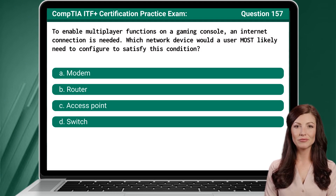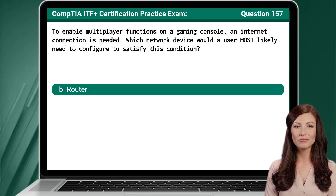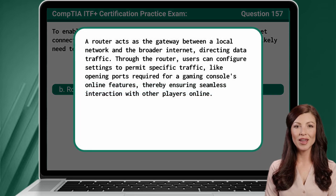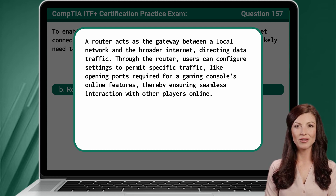Question 157. To enable multiplayer functions on a gaming console, an internet connection is needed. Which network device would a user most likely need to configure to satisfy this condition? The answer is B: router. A router acts as the gateway between a local network and the broader internet, directing data traffic. Through the router, users can configure settings to permit specific traffic, like opening ports required for a gaming console's online features, thereby ensuring seamless interaction with other players online.